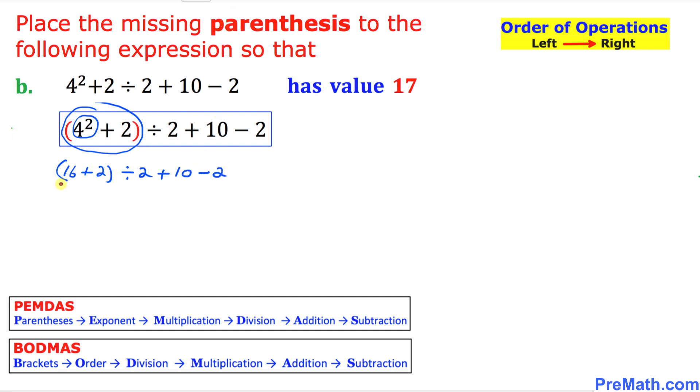The next thing we are still going to be working on is this parenthesis. So that is going to give us 16 plus 2 is 18 divided by 2 plus 10 minus 2.